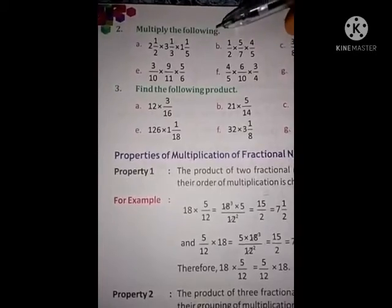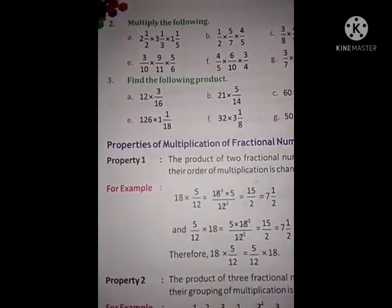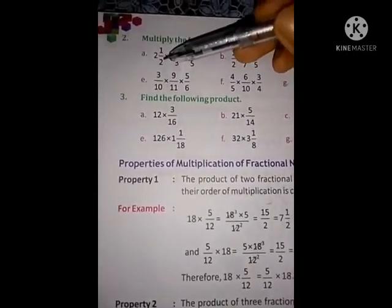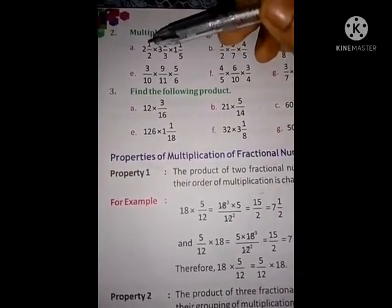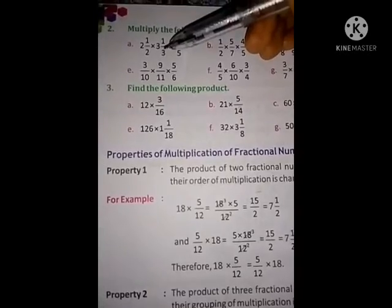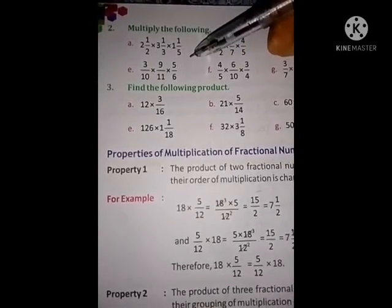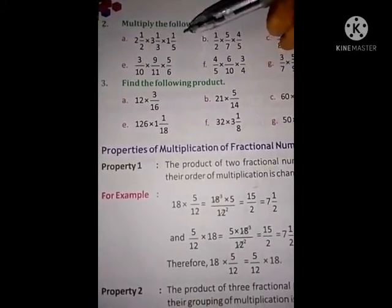See, question number 2. Multiply the following. Here, mixed numbers are given. We have to first make the mixed numbers into improper fractions. And after that, same method. Multiply all denominator with denominator and numerator with numerator. Okay.